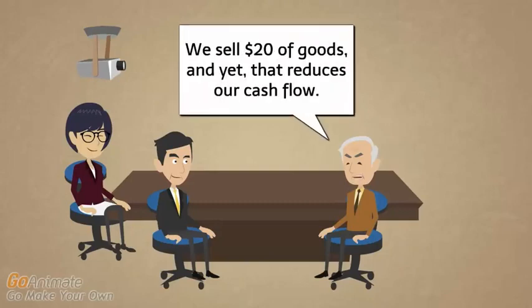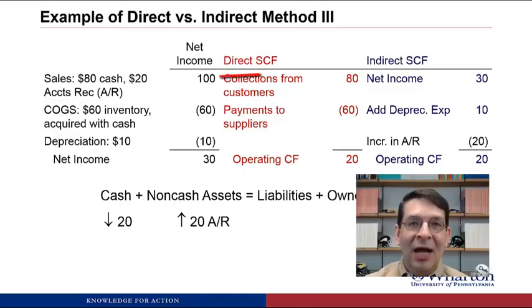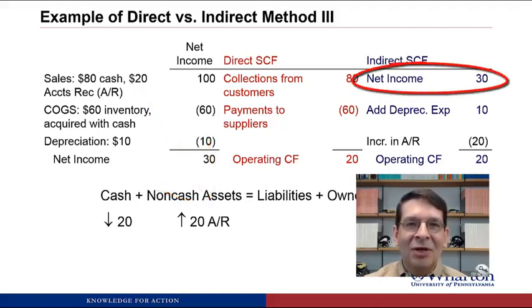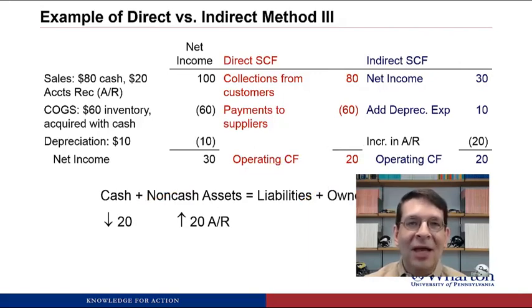We sell $20 of goods, and yet that reduces our cash flow — isn't that like cutting off a nose to spite the face? Let's think through the intuition. We want to start with net income and make adjustments to get to cash from operations. Net income includes $100 of sales — all legitimate, meeting revenue recognition criteria — but $20 of those sales were never collected in cash. What we need to do is start with net income, which includes the $100 of sales, and remove the non-cash sales. The increase in accounts receivable keeps track of the non-cash sales, because anytime we make a sale on credit we increase accounts receivable. So subtracting the $20 increase in accounts receivable removes the $20 of non-cash sales, leaving us with $80 of cash sales as cash from operations.